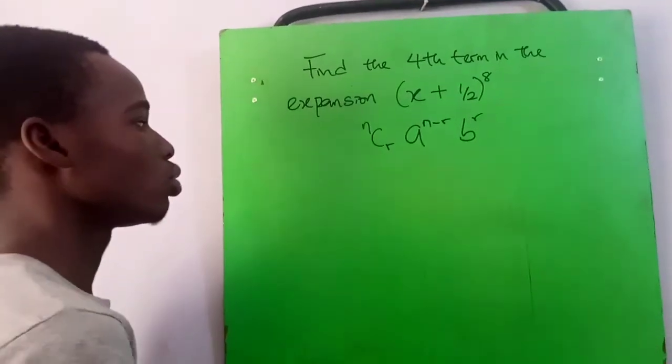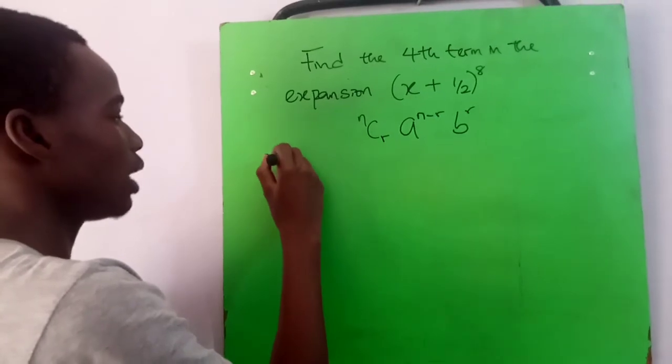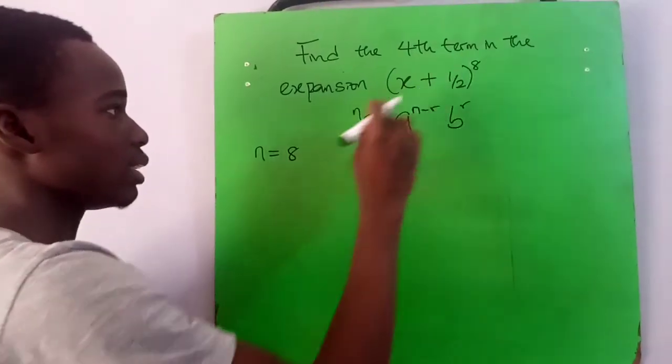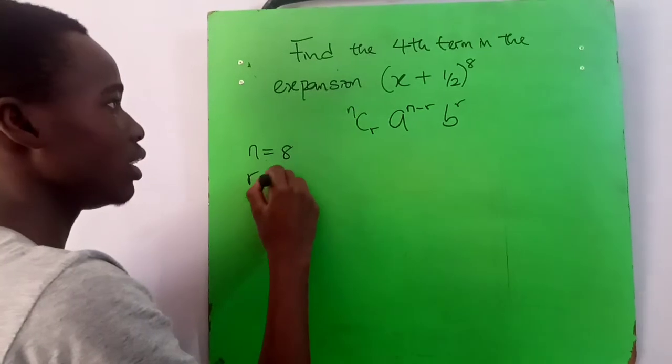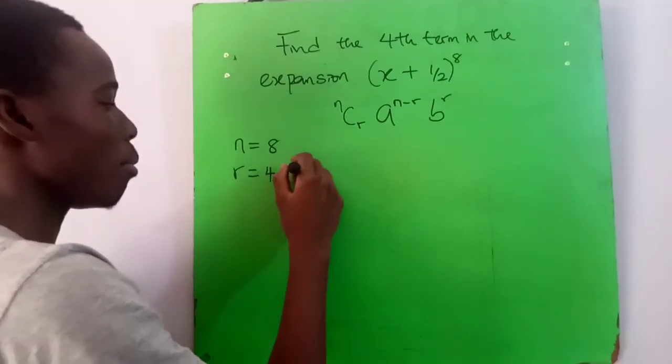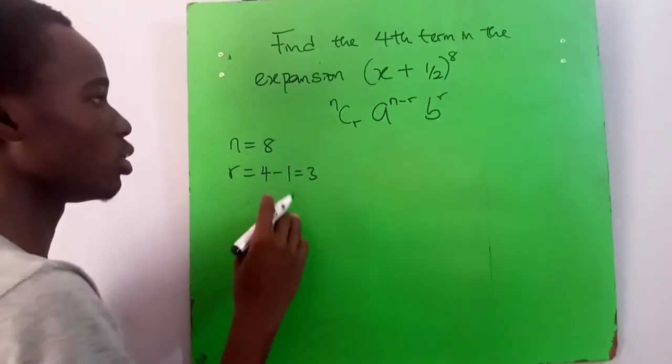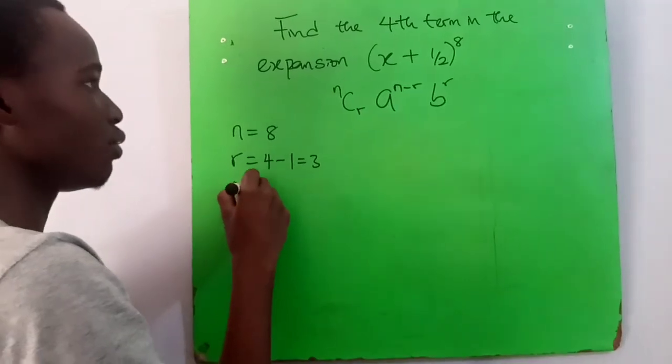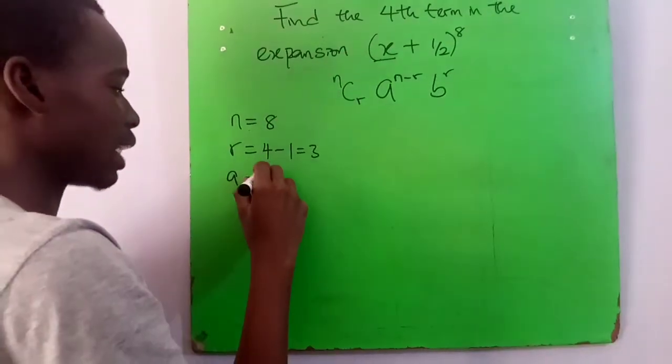So when we write it out, n is our 8, yes, that's the exponent. r is the term, that's four minus one, which is equal to three. a, which is the first term, is x, while our b, the second term, is one over two.